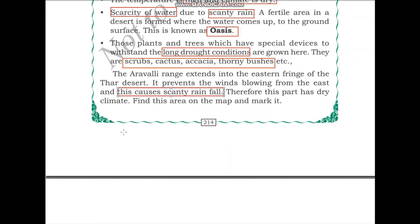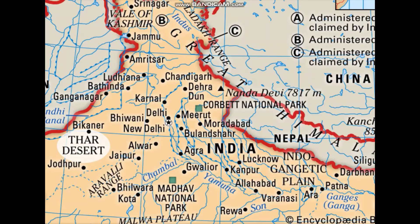Find this area on the map and mark it. As we can see, we have the Thar Desert and the Aravali Range here. You can map this on an outline map of India.